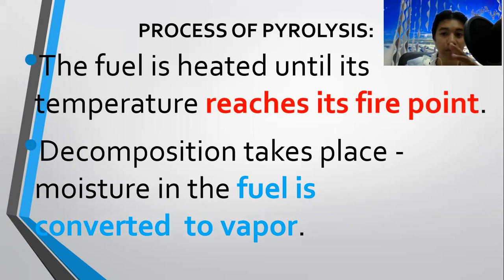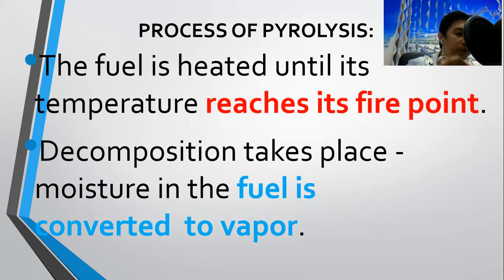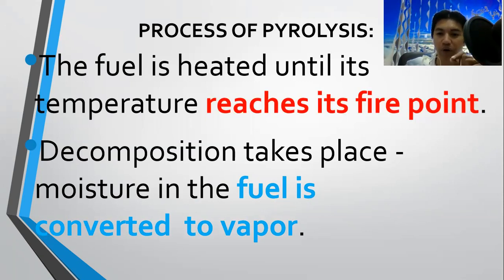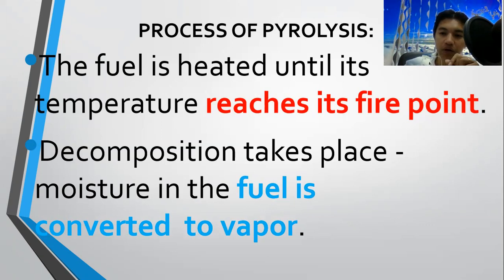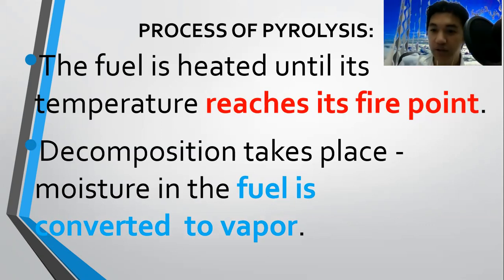Once the fire point is reached, the process begins — energy is consumed. And while the material is being exposed to heat, it produces vapor. What happens when the vapor is already consumed? When it continues to reach its ignition point and all the vapor is burned, the result appears to be like charcoal.